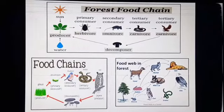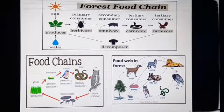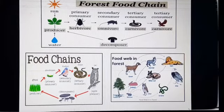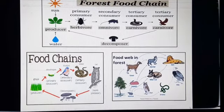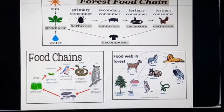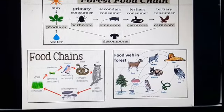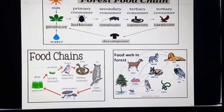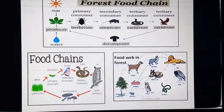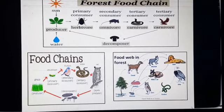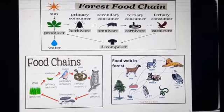Let us understand this clearly with the help of this slide. Living organisms like plants interact with soil to obtain nutrients, such as mineral salts, for their growth. Plants interact with water present in the soil or water bodies to get water for making food by photosynthesis. Plants also interact with air to obtain carbon dioxide for photosynthesis.